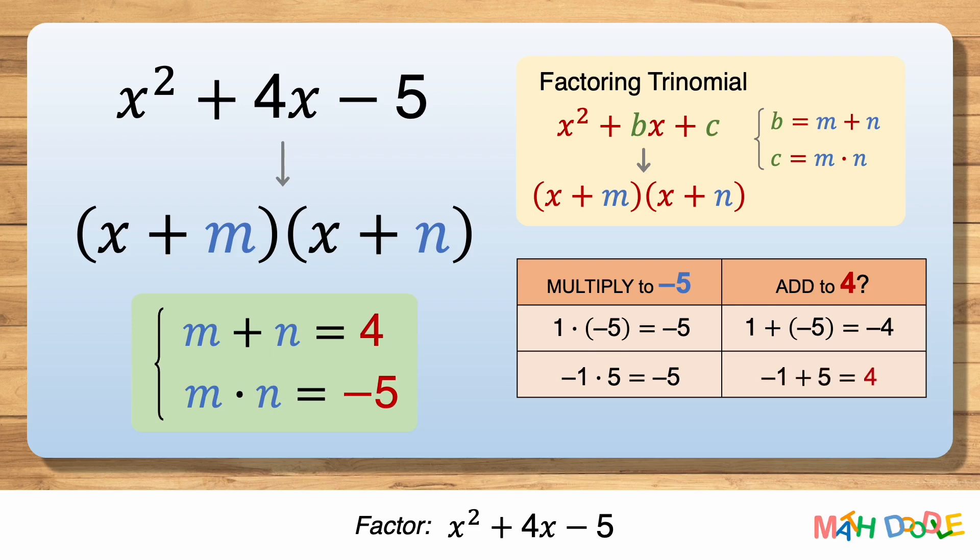And minus 1 plus 5 is 4. So minus 1 and 5 not only multiply to minus 5 but also add to 4. This means m and n are minus 1 and 5, so the answer is x minus 1 times x plus 5.